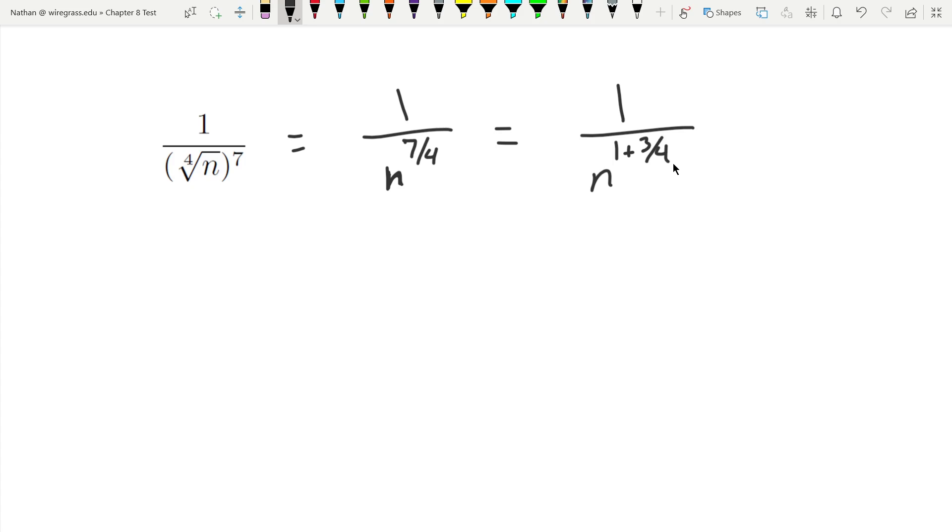That's the same thing as 7 fourths, because it's 4 fourths plus 3 fourths is 7 fourths. And I can break the radical, or break this power up into n and into the 3 fourths.